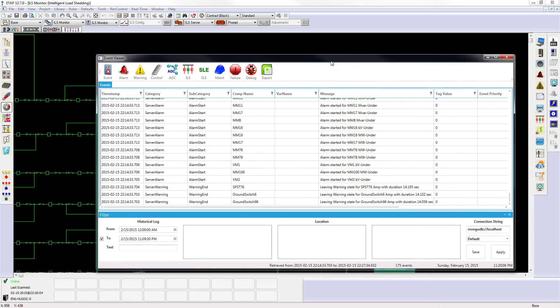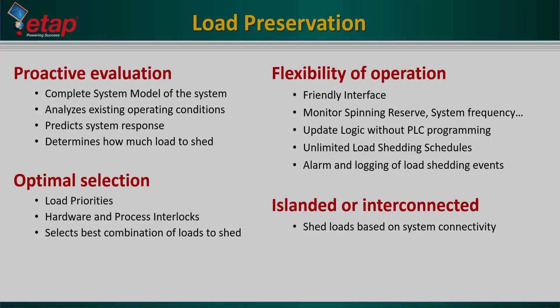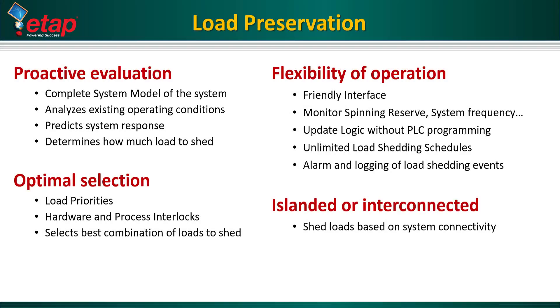All events and alarms from the operation of load shedding are stored in the event viewer. This includes loads that have been shed and triggers that have been executed. One of the most powerful capabilities of ILS is the automatic handling of loads to shed based on how the network is interconnected.